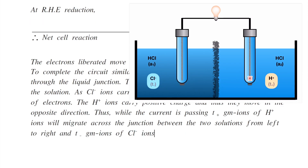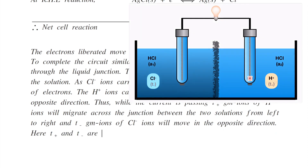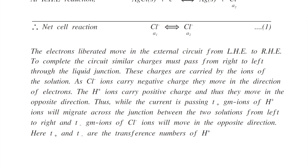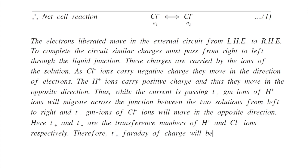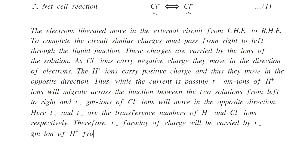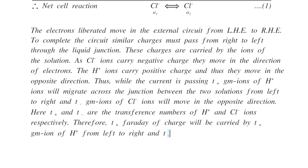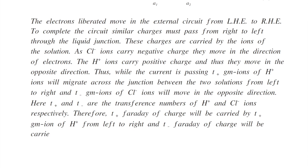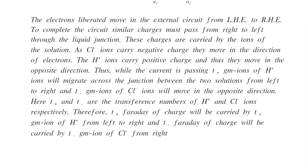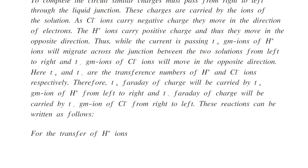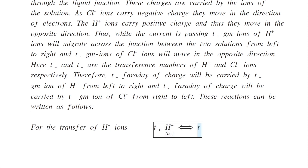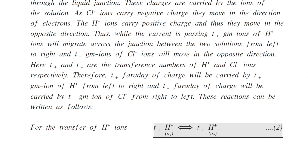T− gram ions of chloride ions will move in the opposite direction. Here, T+ and T− are the transference numbers of hydrogen and chloride ions respectively. Therefore, T+ faraday of charge will be carried by T+ gram ions of H+ from left to right, and T− faraday of charge will be carried by T− gram ions of chloride from right to left. For the transfer of hydrogen ions: T+ gram ions of H+ of activity A1 are transferred to T+ gram ions of H+ of activity A2. This is equation number 2.